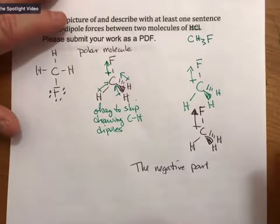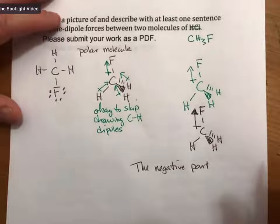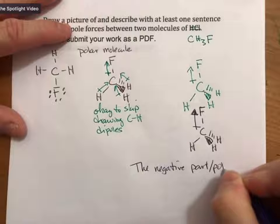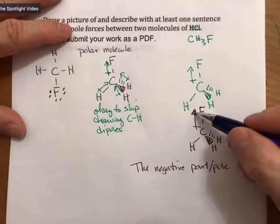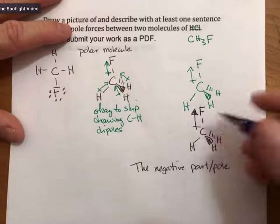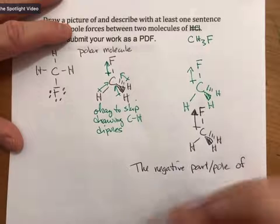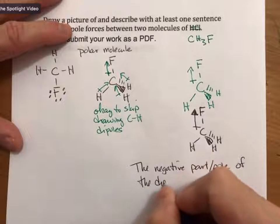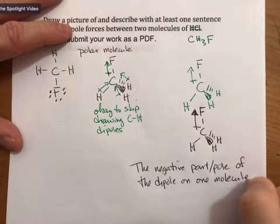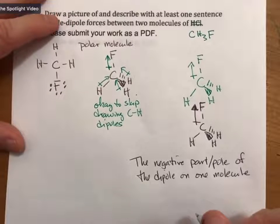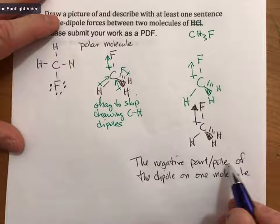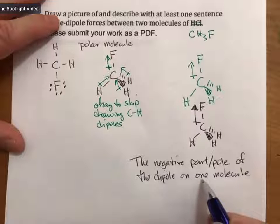Let me say that again. I think I could use better words. The negative part or pole, since it's a dipole we can call this part a pole, of the dipole on one molecule is attracted to the positive part or pole of the dipole on another molecule.